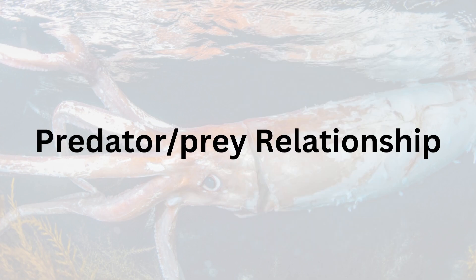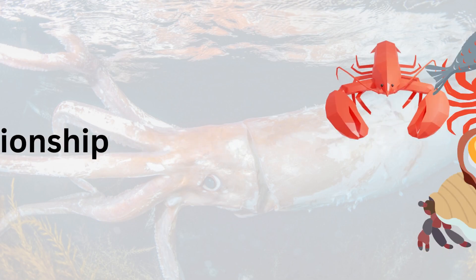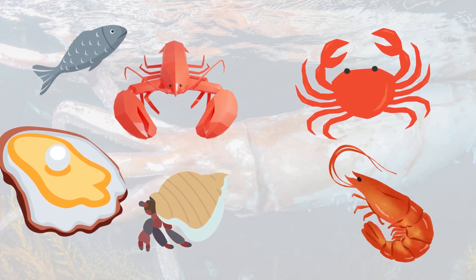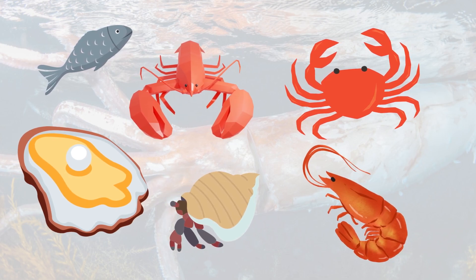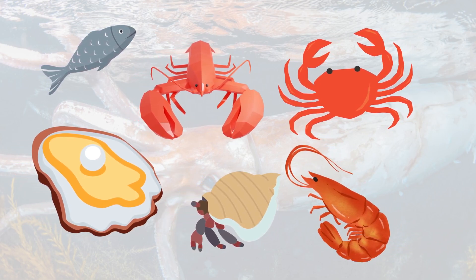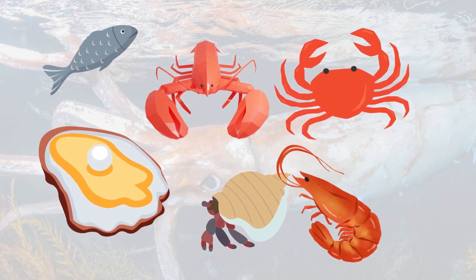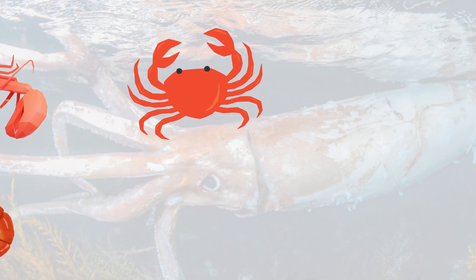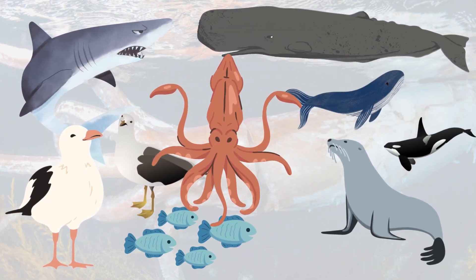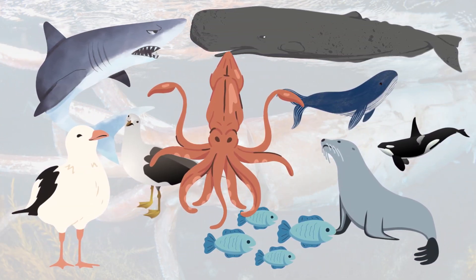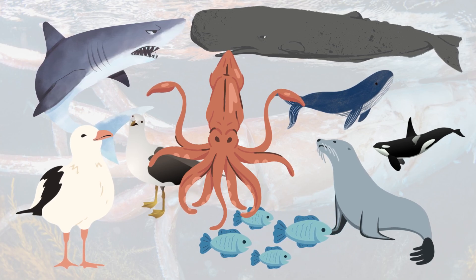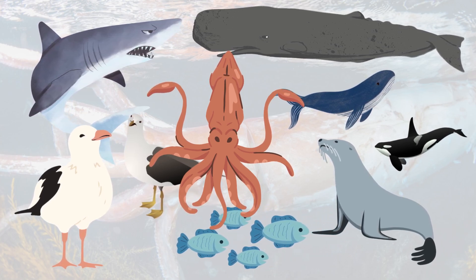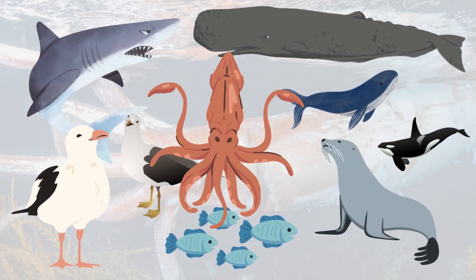What is the predator-prey relationship of a squid? As a predator, squid have a varied diet, feeding on a wide range of marine organisms from fish to crustaceans. As prey, squid are preyed upon by various predators including sharks, fish, cetaceans, sperm whales, and even by other squids.